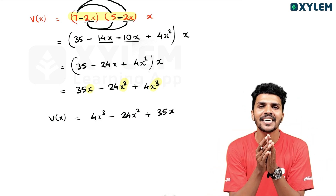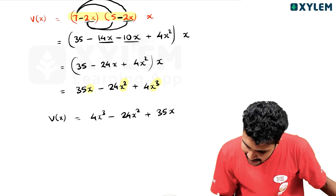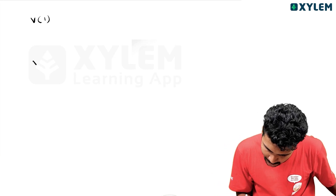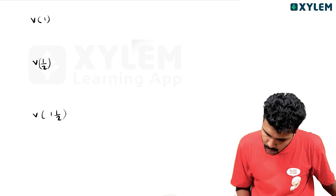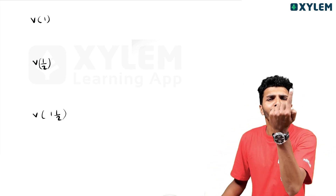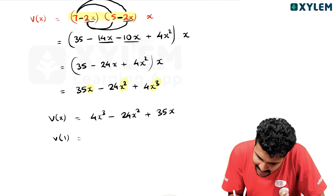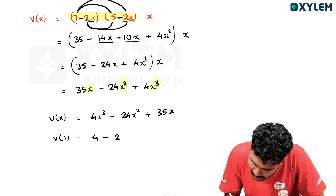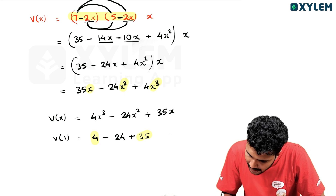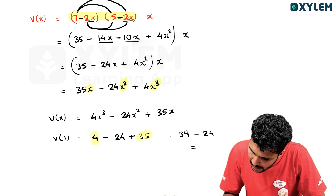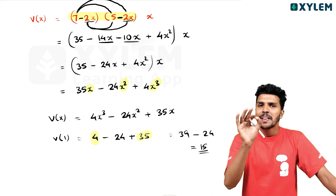V of x is equal to 4x cubed minus 24x squared plus 35x. We have to write V of x. V of 1 is equal to: 4 minus 24 plus 35. That is 39 minus 24, the answer is 15.